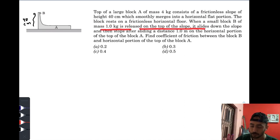And then stops after sliding a distance of one meter on the horizontal portion. So this region is rough and this one is frictionless. Block B slides over block A on the horizontal part by one meter. Find the coefficient of friction. Now this one is also frictionless.